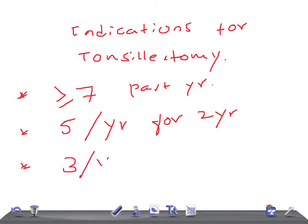And if it's three episodes of acute streptococcal pharyngitis per year for three years, then you can go ahead with the tonsillectomy. So these are really very important. And another is unilateral enlarged tonsil.